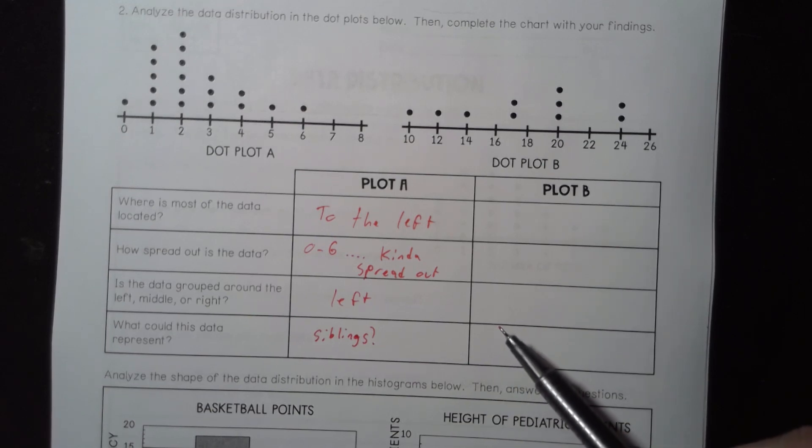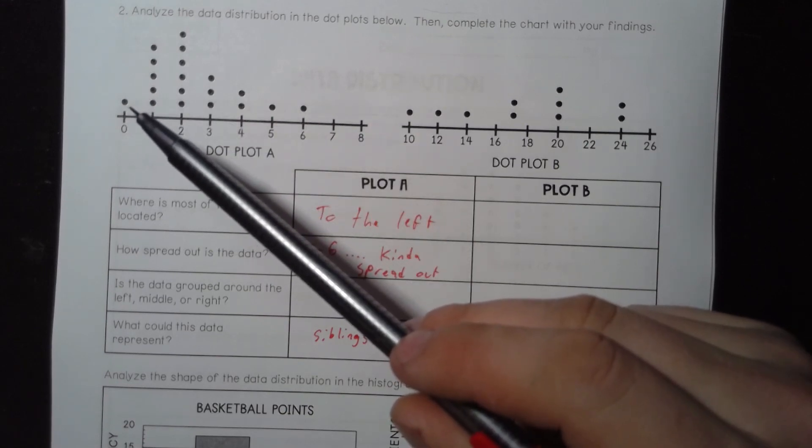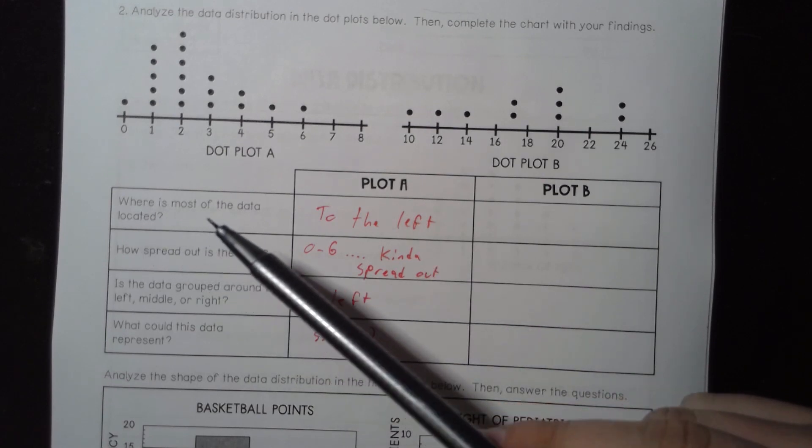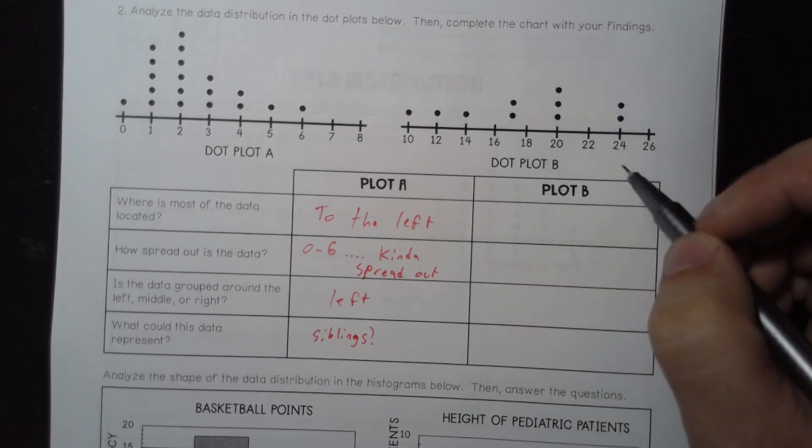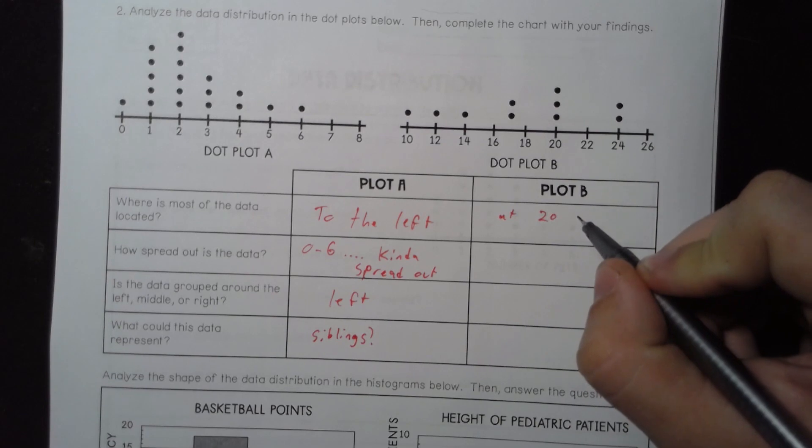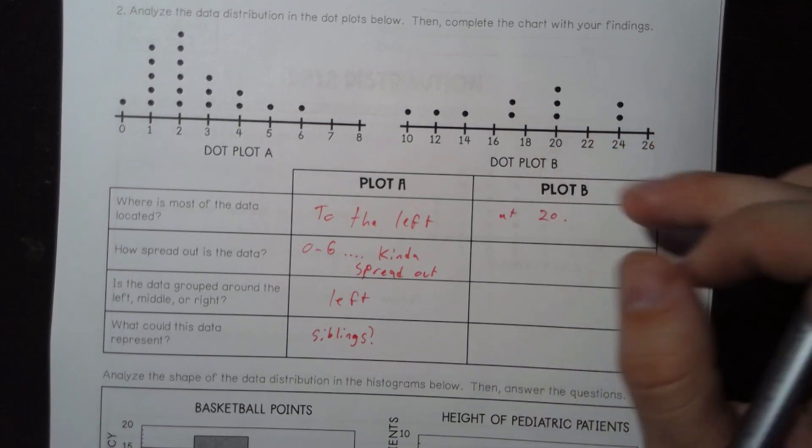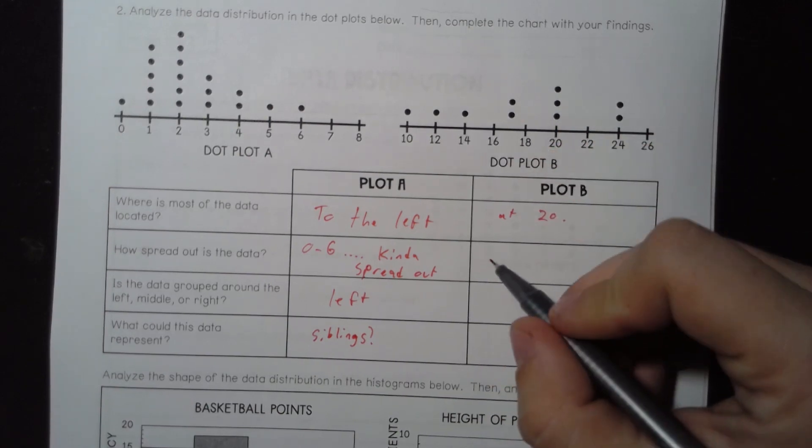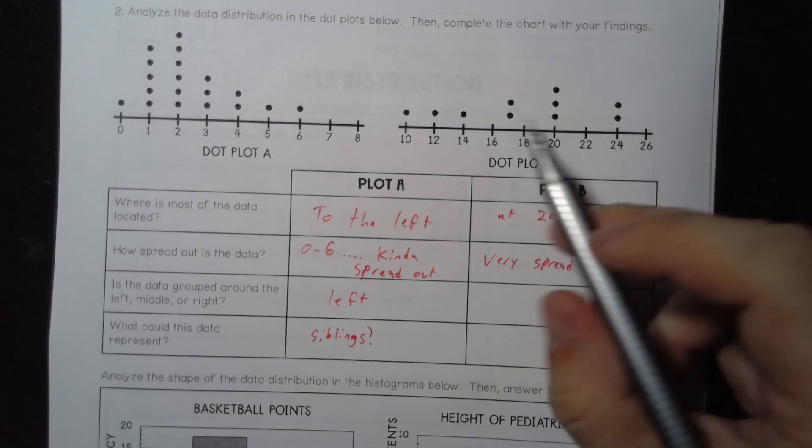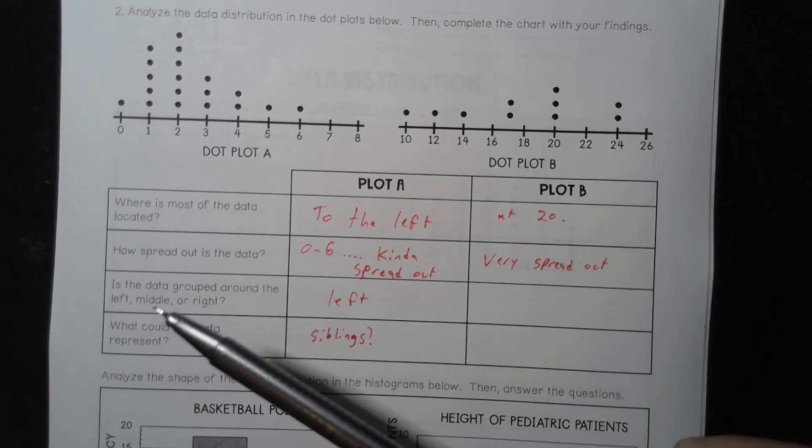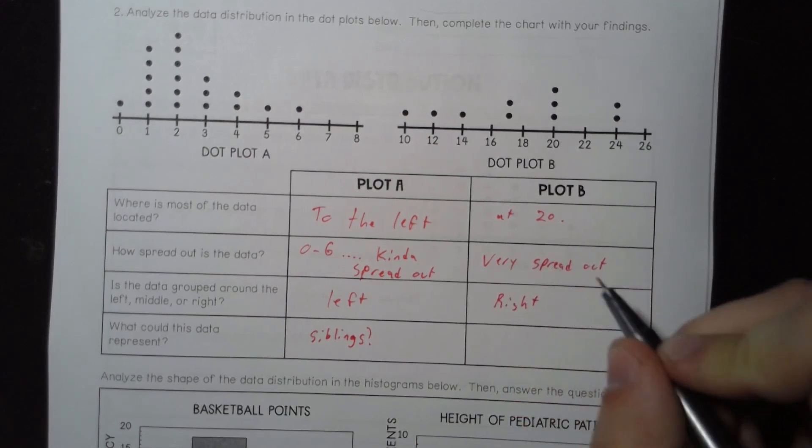It could be how many fish does Mr. Altamir catch when he goes fishing. This is a really good day, this is a pretty bad day. Let's see, where is most of the data located for plot B? Everywhere. Maybe at 20, or near 20, could be a good answer. You could argue it's mostly on the right, but it's very spread out. Very spread out. This data is kind of everywhere. Is data grounded around the left, middle, or right? Mostly to the right.